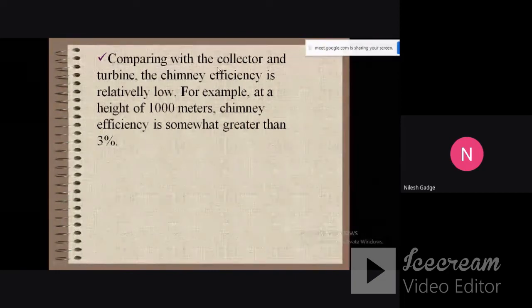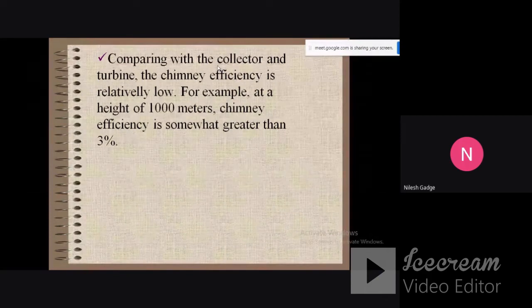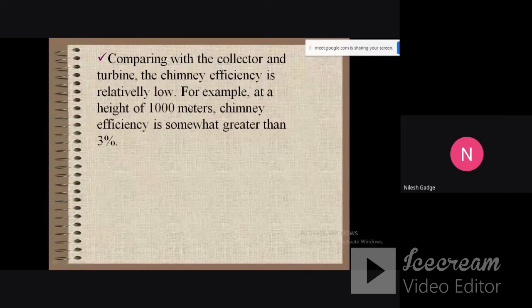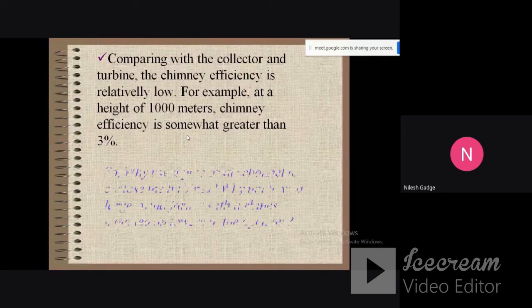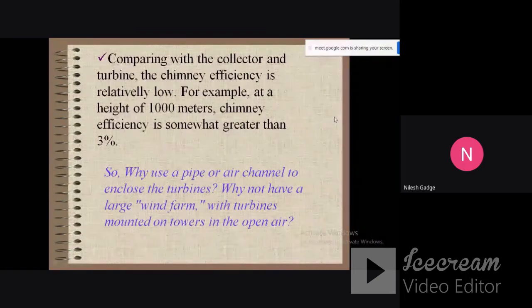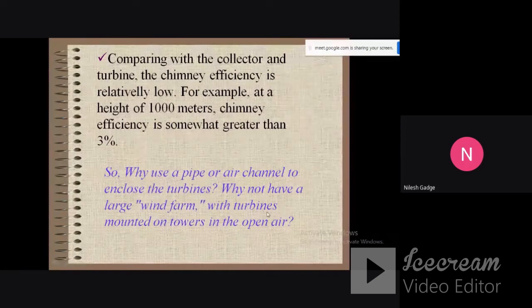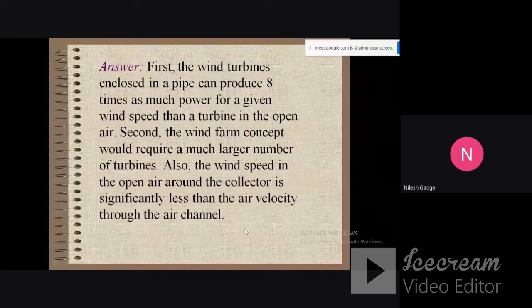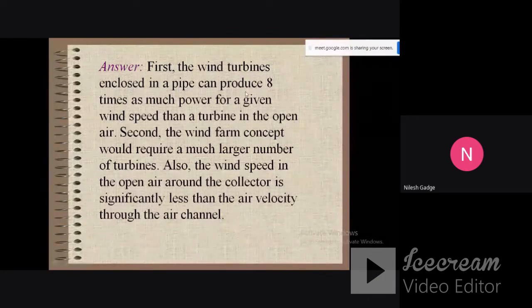The collector has plastic glazed covering that absorbs the solar radiation. The efficiency is less - for example, at a height of 1000 meters, chimney efficiency is somewhat greater than three percent. Why use a pipe or air channel to enclose the turbine? Why not have a large wind farm with turbines mounted on towers in the open air? With a windmill wind farm, it is more efficient than this chimney. The answer is given to this question.